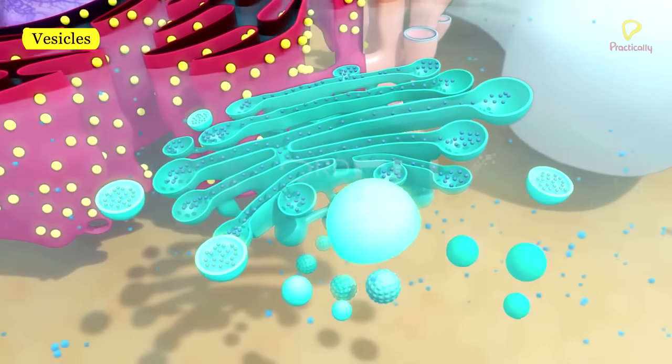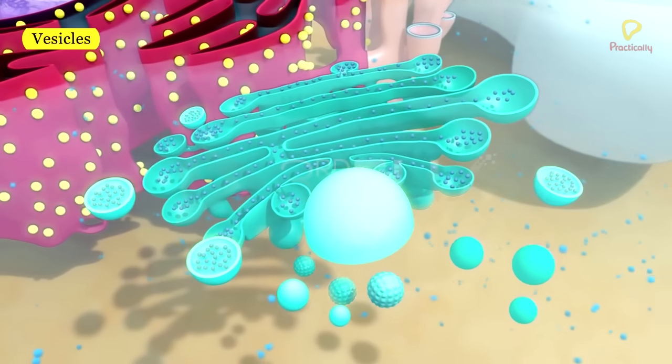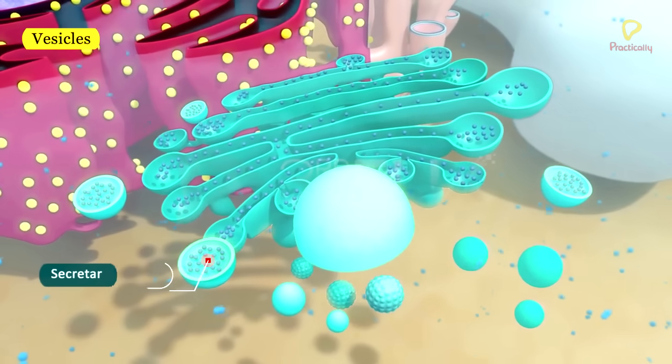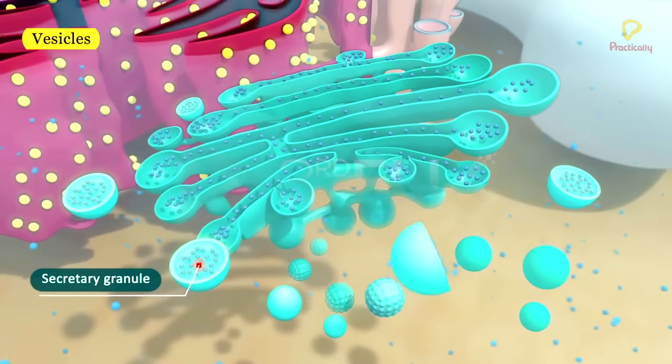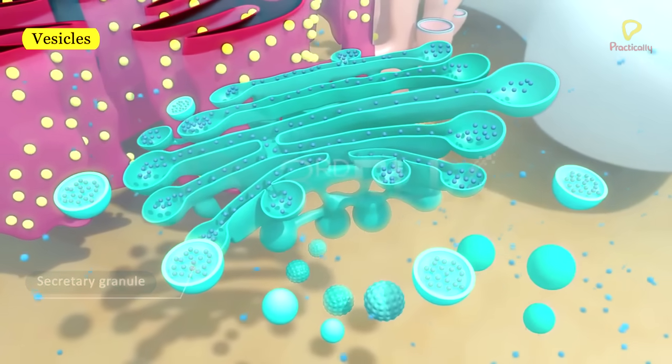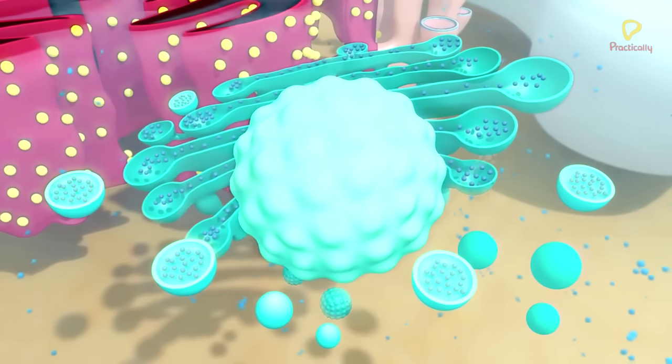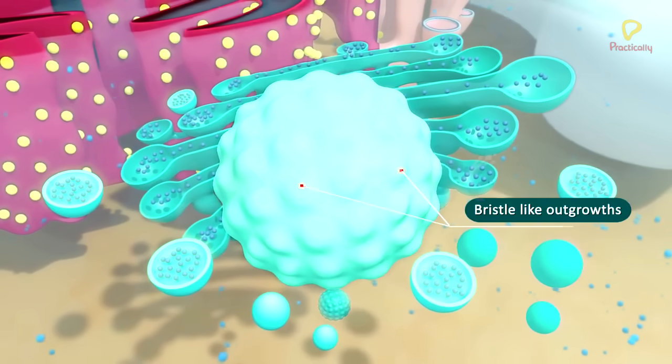Smooth vesicles are smooth-surfaced secretory vesicles. They have secretory granules. Coated vesicles are rough-surfaced vesicles. They are covered by fine, bristle-like outgrowths.